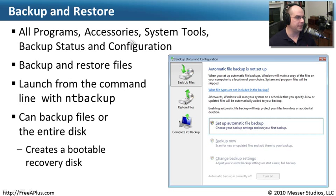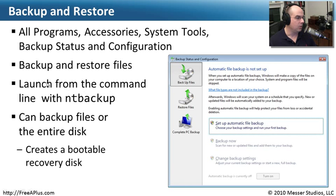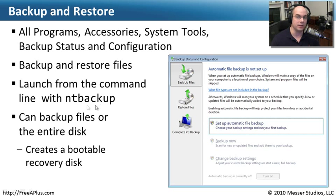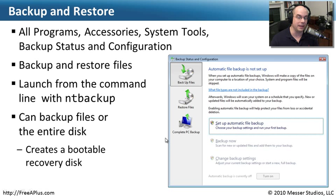You can go into All Programs, Accessories, System Tools, and there's a Backup Status and Configuration utility. On Windows 2000, Windows XP, and Vista, we have options for backing up this data. We can backup and restore individual files, or we can also do a complete PC backup — take the entire contents of this machine and back the entire thing up. If something happened to this computer, you could put in your Windows installation media and restore from a complete PC backup onto a brand new drive. You can also launch this from the command line with ntbackup, which goes back to the Windows NT days. This will also create a bootable recovery disk if you don't have your recovery media.